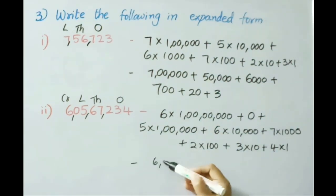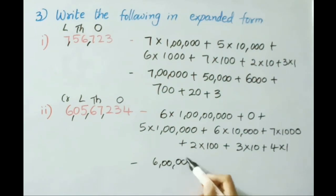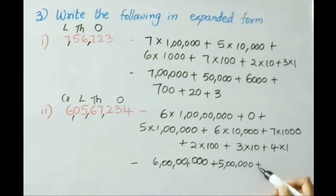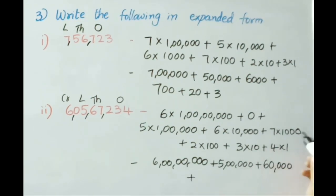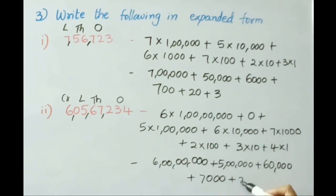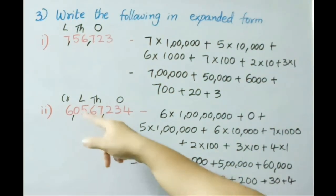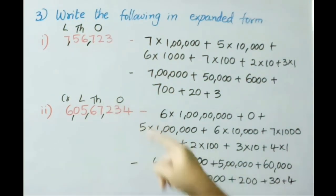Now write: 6 × 1 crore = 6 crore, plus 5 × 1 lakh = 5 lakh, plus 6 × 10,000 = 60,000, plus 7 × 1,000 = 7,000, plus 2 × 100 = 200, plus 3 × 10 = 30, plus 4 × 1 = 4. So this is the expanded form for the number 6 crore, 5 lakhs, 67,234.